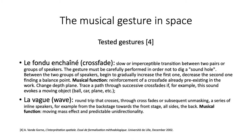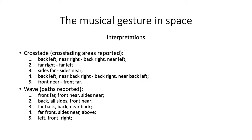In our case, two different gestures have been tested and automated on the acusmonium: the crossfade and the wave. The crossfade is a slow movement between two pairs or groups of speakers. The wave is a round trip that moves between a series of speakers, for example from the backstage to the front stage, passing through the side speakers. Five different interpretations for each of the two gestures have been programmed to test their effectiveness inside the virtual acusmonium environment, as it was important to try and include all its various micro-areas.